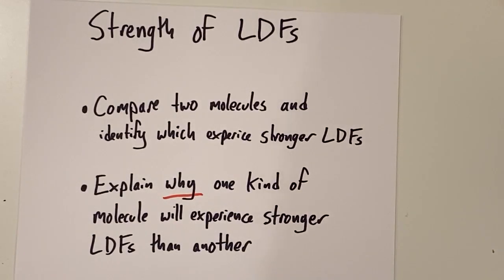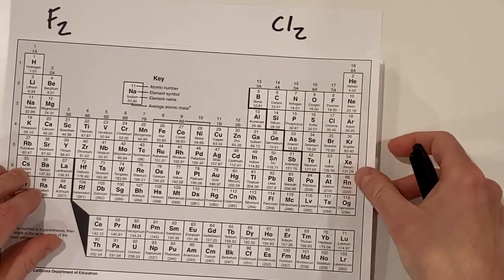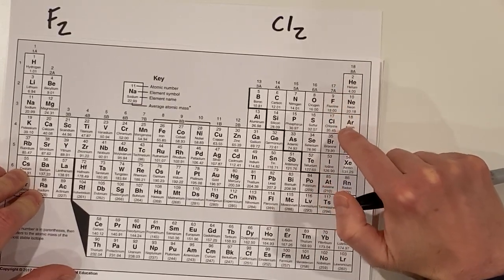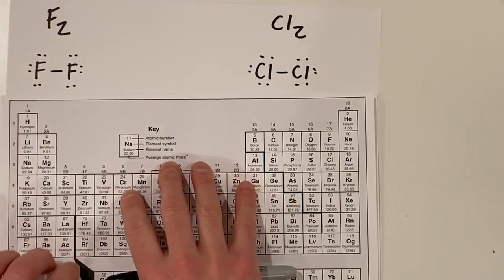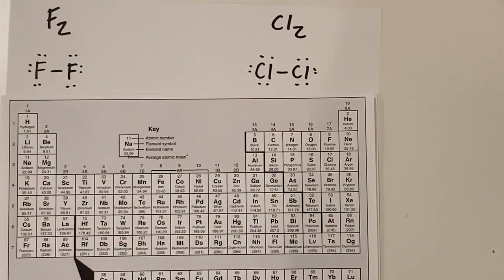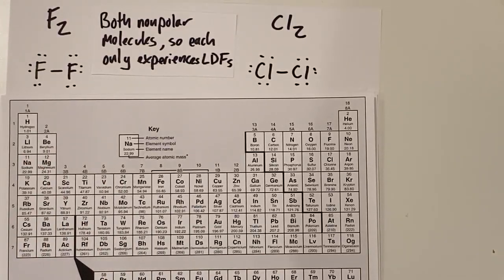In order to do that, let's examine two molecules that only experience London dispersion forces: F2 and Cl2. If we look at the periodic table, fluorine and chlorine are both in group 17, so they both have seven valence electrons. The Lewis dot diagram for these molecules is pretty similar — both bonded by single bonds. Because both atoms in the molecule are identical, we don't have any polar bonds, so the molecules will be non-polar. Non-polar molecules only experience London dispersion forces.